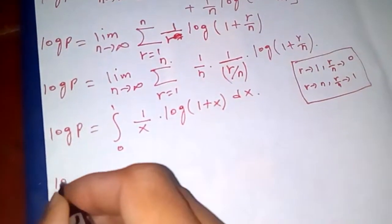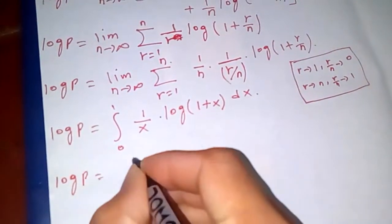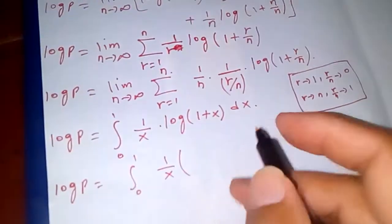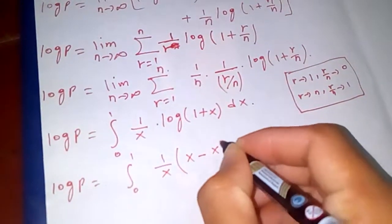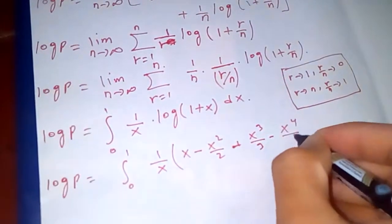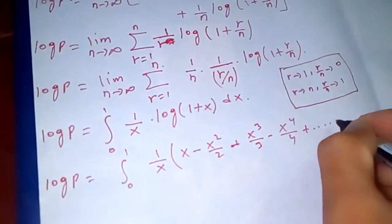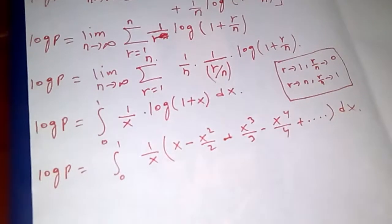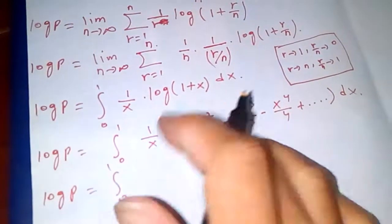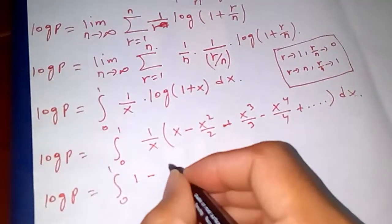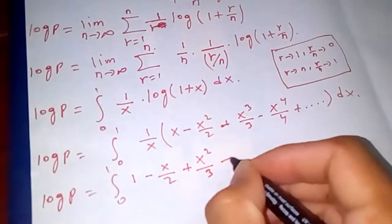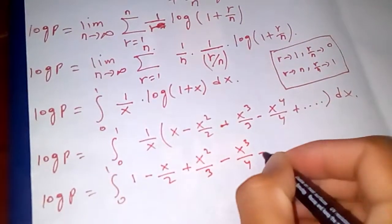So log P equals the integral from 0 to 1 of (1/x) log(1 plus x) dx. Now, log(1 plus x) equals x minus x²/2 plus x³/3 minus x⁴/4 plus ... Dividing by x, the integrand becomes 1 minus x/2 plus x²/3 minus x³/4 plus and so on.